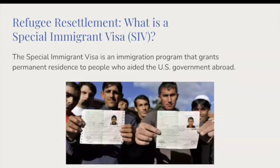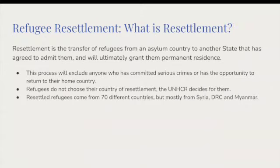Next, what is a Special Immigrant Visa? A Special Immigrant Visa, or SIV, is an immigration program that grants permanent residence to people who aided the US government abroad. What is resettlement? Resettlement is the transfer of refugees from an asylum country to another state that has agreed to admit them and will ultimately grant them permanent residence.